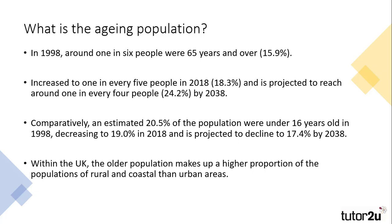This has impacts on the structure of British society. Geographically, towns and cities are more likely to have younger people living in them, with the older population making up a higher proportion of those living in rural and coastal areas. This demonstrates the divide in the UK population, and can have impacts on political views, house prices and the services in those areas.